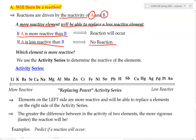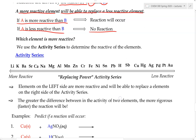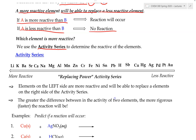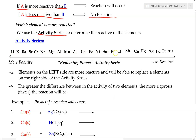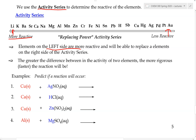So how do we know which element is more reactive? We use something called the activity series. The activity series is an experimental ranking of elements by reactivity. Elements on the left side of the activity series are more reactive, and elements on the right side are less reactive. Elements on the left will be able to replace elements on the right. The greater the difference between two elements on the activity series, the more vigorous the reaction will be.